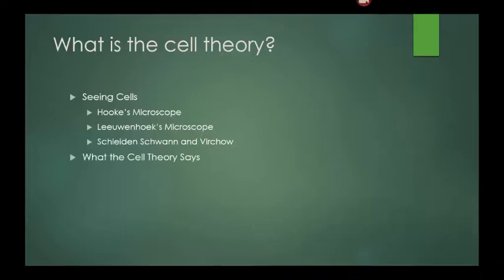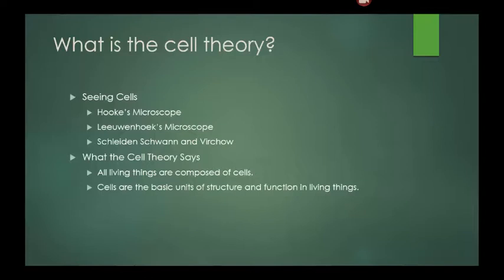So what the cell theory says. The cell theory states the following: all living things are composed of cells. Cells are the basic units of structure and function in living things. And all cells are produced from other cells. Living things differ greatly from one another, but all are made of cells. The cell theory holds true for all living things, no matter how big or small. Because cells are common to all living things, cells can provide clues about the functions that living things perform. And because all cells come from other cells, scientists can study cells and learn how growth and reproduction occur.